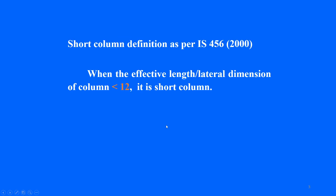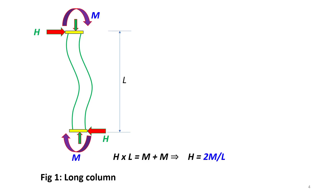When we say 'short column,' it may immediately bring to mind the definition in reinforced concrete codes. In the Indian code, when the ratio of effective length to least lateral dimension is less than 12, it is a short column. For this video, we are not using that definition. Here, a short column is one that is relatively shorter than the columns in its surrounding. We consider a column of height L.